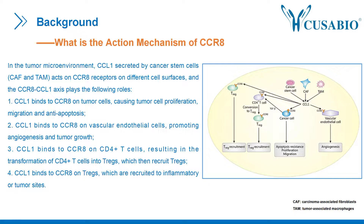Second, CCL1 binds to CCR8 on vascular endothelial cells, promoting angiogenesis and tumor growth. Third, CCL1 binds to CCR8 on CD4+ T cells, resulting in the transformation of CD4+ T cells into Tregs, which then recruit more Tregs. Fourth, CCL1 binds to CCR8 on Tregs, which are recruited to inflammatory or tumor sites.